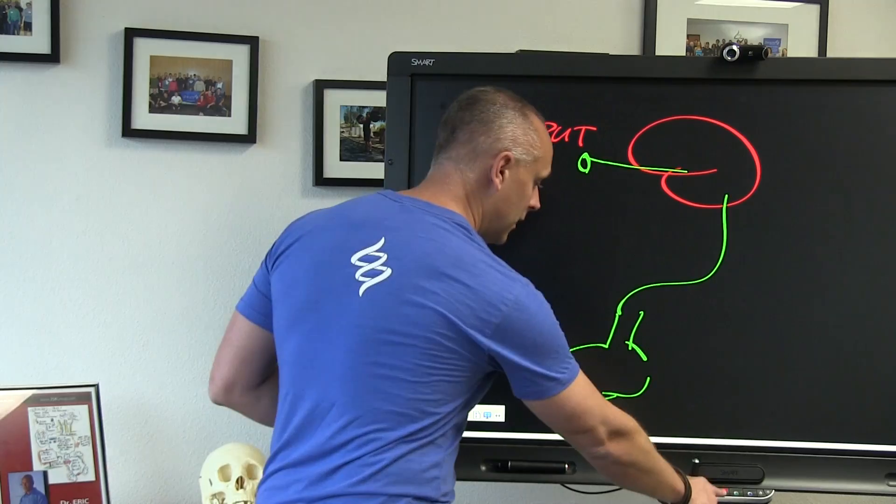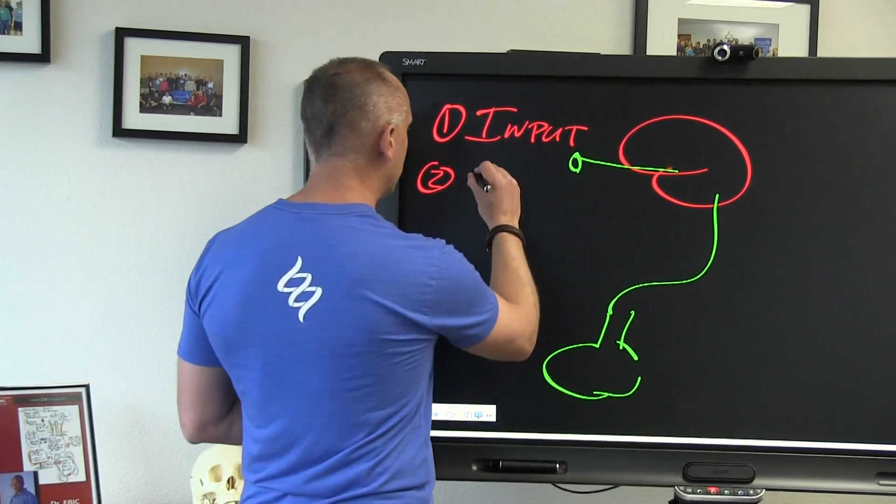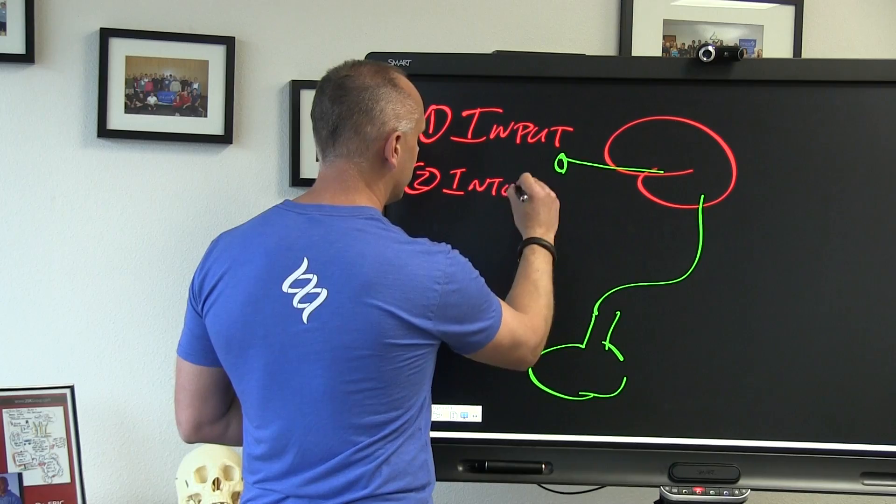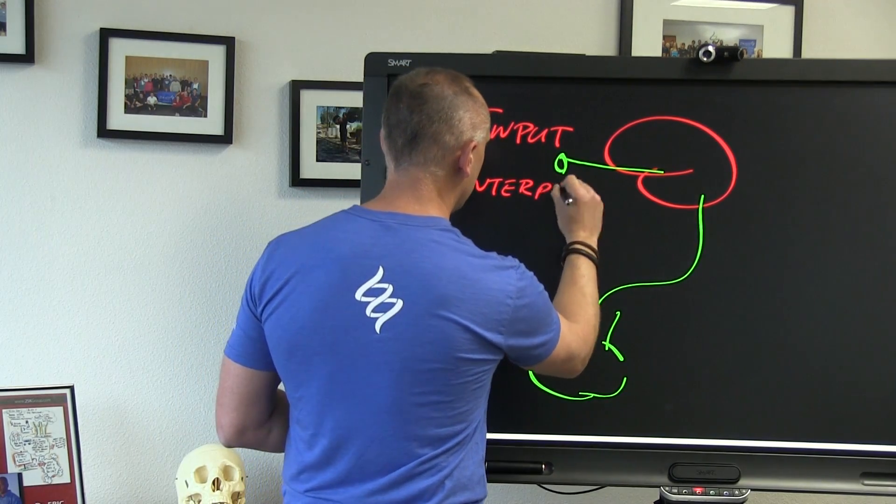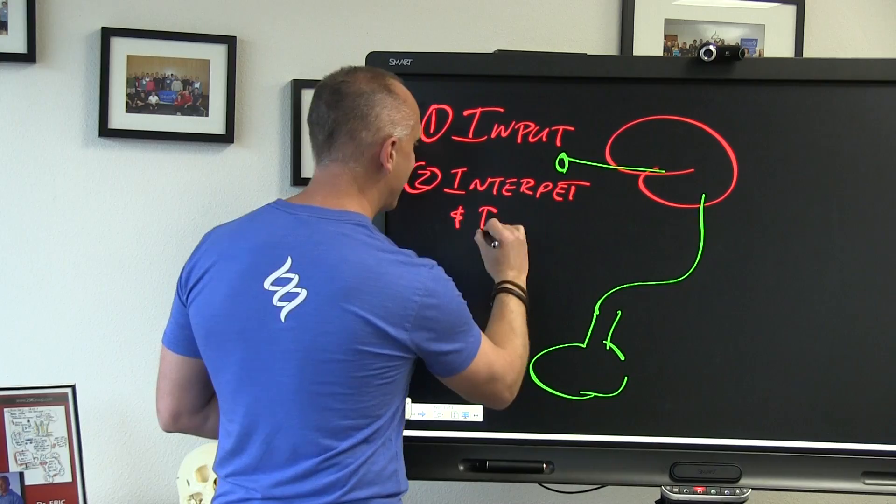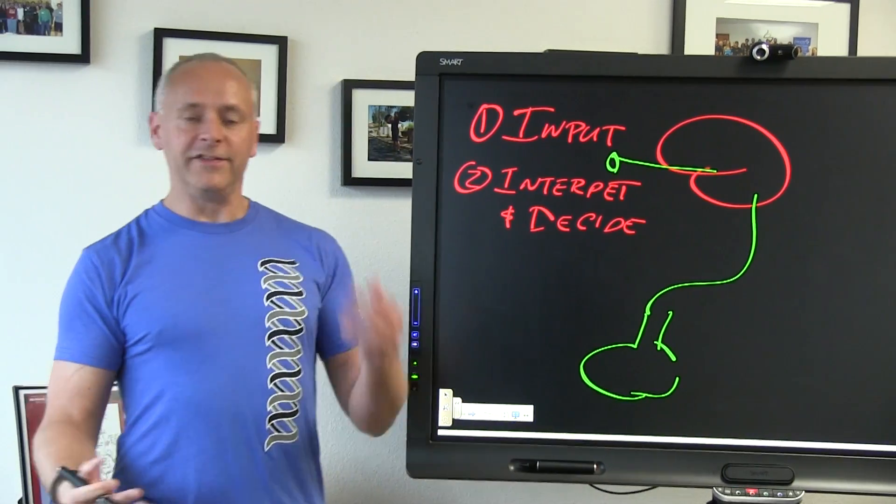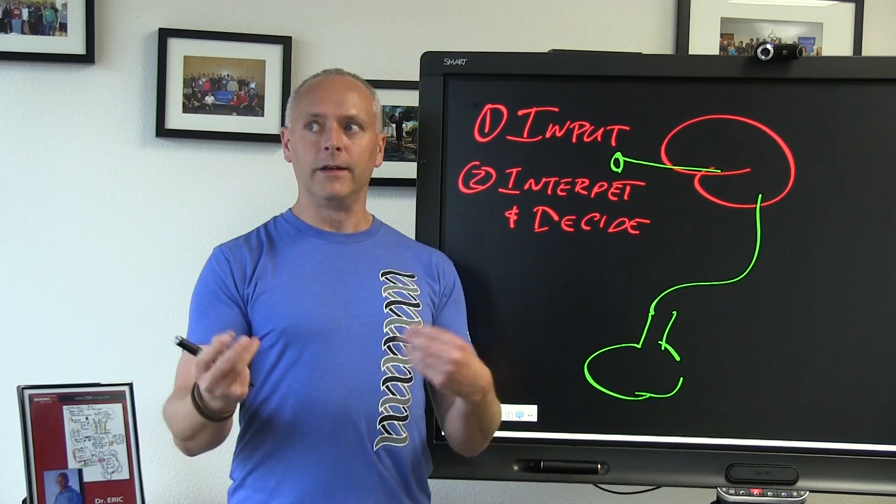Number two then, second task of the brain is to receive that input and interpret it. The brain has to interpret and decide. Task number two is to take that information in and go, all right, what is it?